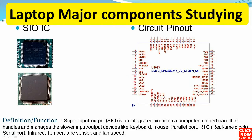The next component is the Super I/O IC. The Super I/O IC is the chip that controls power management across the motherboard. It is connected to the keyboard, the BIOS, etc. Here we have the pin configuration of this I/O chip. As a definition, the Super I/O is an integrated circuit on a computer motherboard that handles and manages slower input/output devices like the keyboard, mouse, parallel port, RTC or real-time clock, serial port, infrared, temperature sensors, and fan speeds.